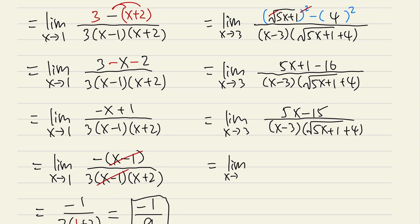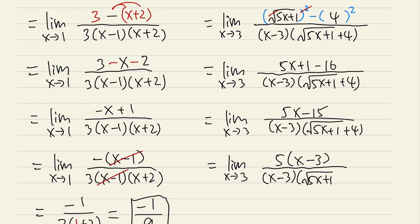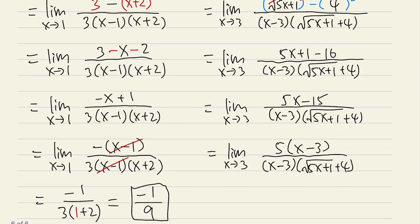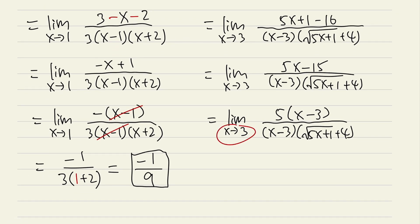Factoring out the 5 gives us 5 times (x minus 3) on the top, over x minus 3 times (square root of 5x plus 1 plus 4) on the bottom. Just as I said — when x approaches 3, the x minus 3 factors cancel. We know we're on the right track.